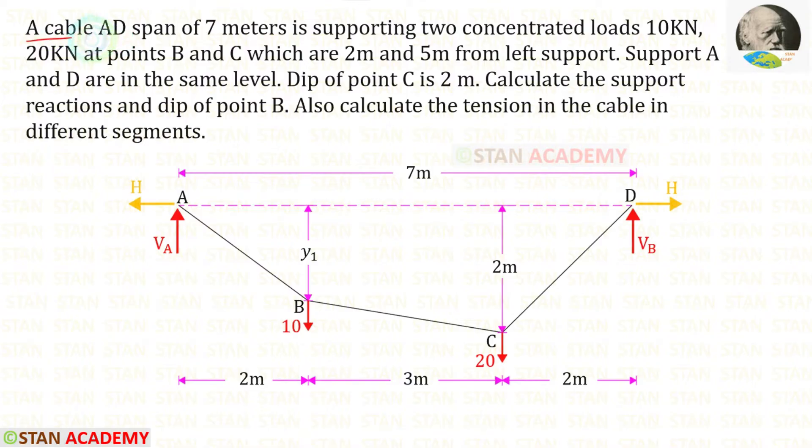A cable AD span of 7 meters is supporting two concentrated loads 10 kN and 20 kN at points B and C which are 2 meters and 5 meters from the left support. This is the left support. So this load is at the distance of 2 meters from the left support and this load is at the distance of 5 meters from the left support.